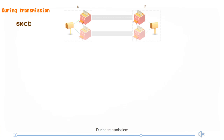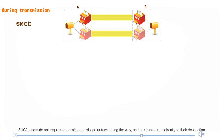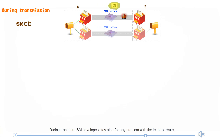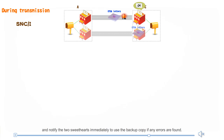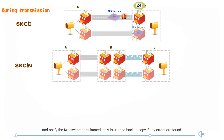During transmission, SNCI letters do not require processing at a village or town along the way, and are transported directly to their destination. During transport, SM envelopes stay alert for any problem with a letter or route and notify the sender immediately to use the backup copy if any errors are found.